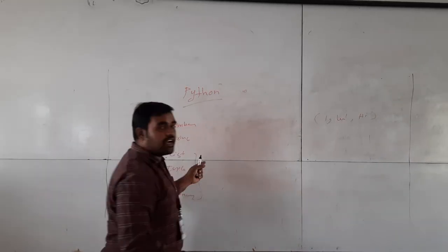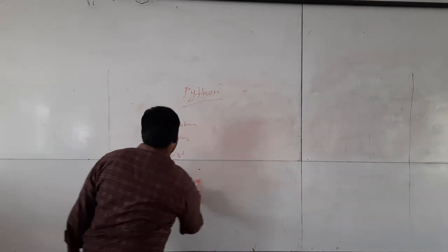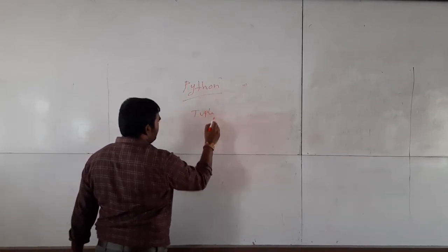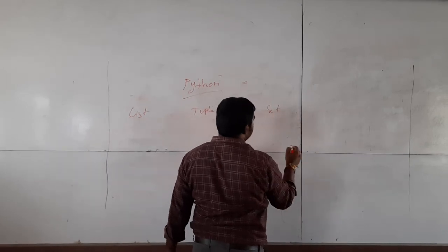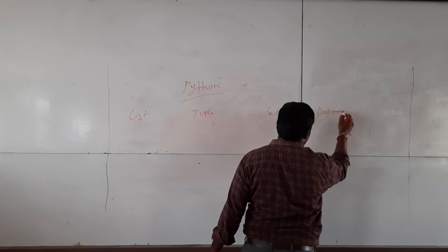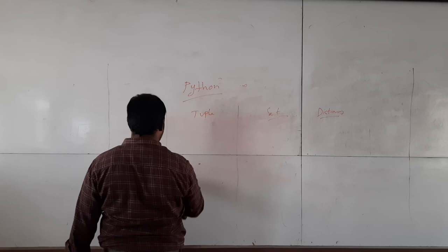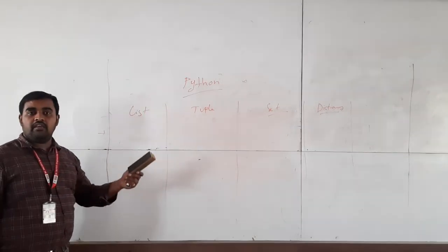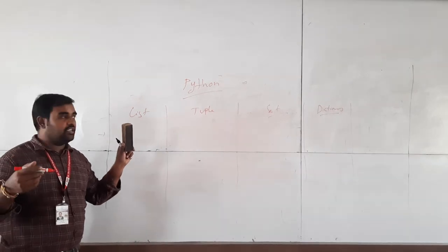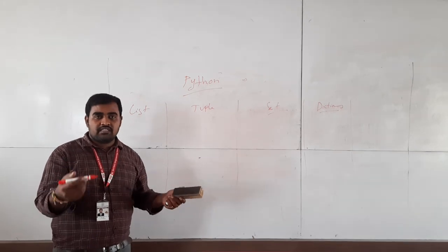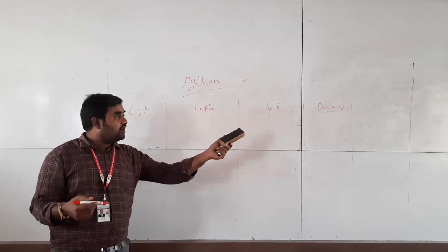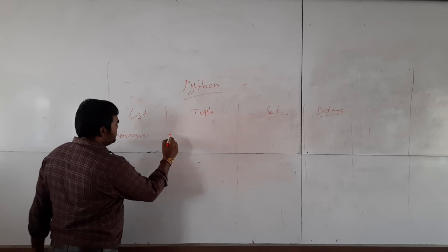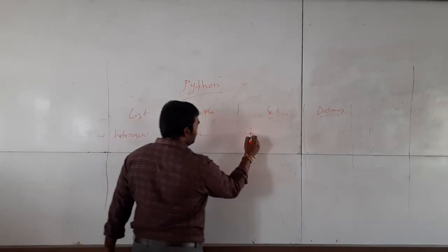I will explain which data type is mutable and which is immutable. I will take a table with list, tuple, set, and dictionary. First point: all the data types are heterogeneous, meaning they can take any type of input — integer, string, floating point, or complex numbers. List is heterogeneous, tuple is also heterogeneous, set is also heterogeneous.